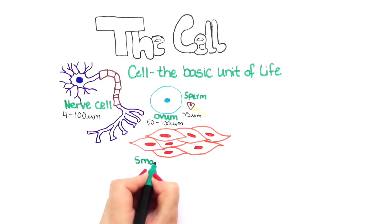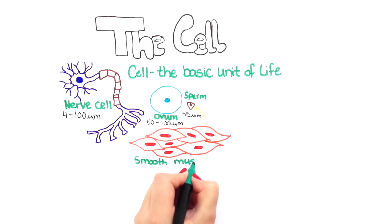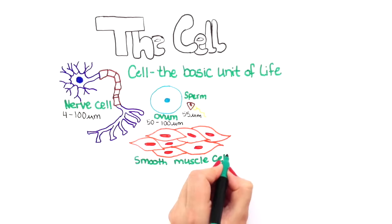Smooth muscles, sometimes called involuntary muscles, are made up of smooth muscle cells. They are usually in sheets or layers with one layer of muscle behind the other. Smooth muscles are at work all over your body.